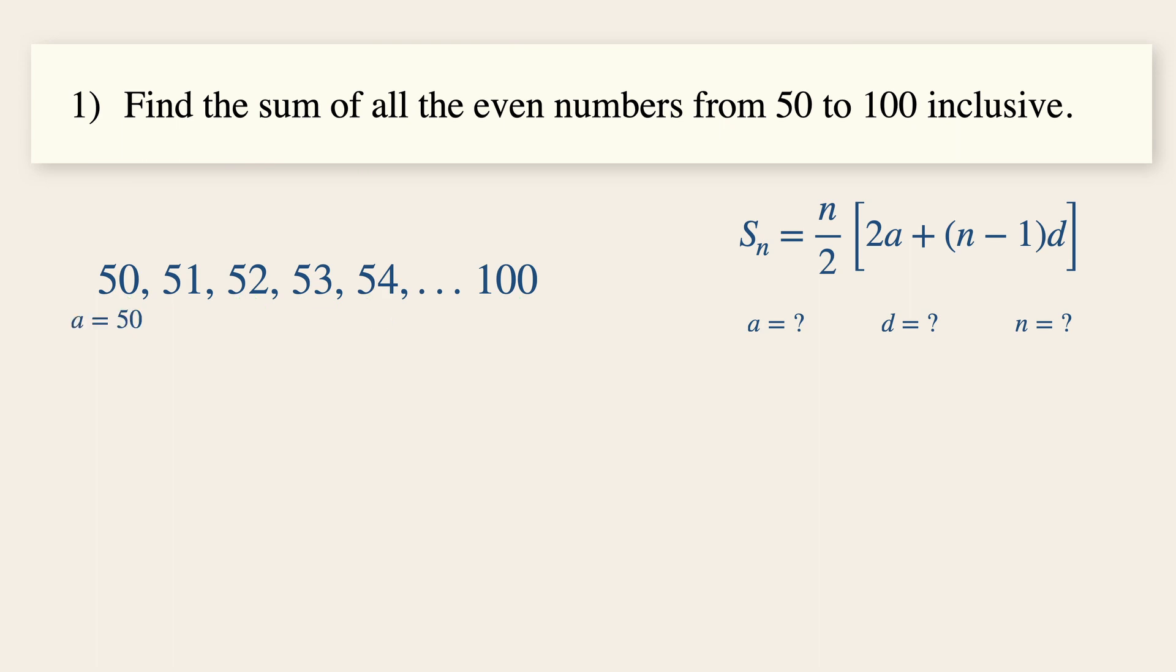This means that a is equal to 50. Between the terms 50 and 52, the common difference is simply 2. Because if we were to add 2 continuously to 52, it gives us an even number 54, 56, 58, and so on until 100.